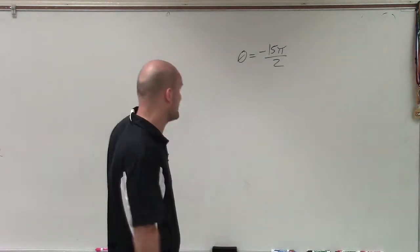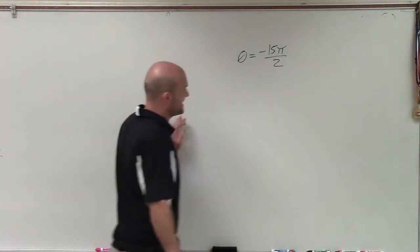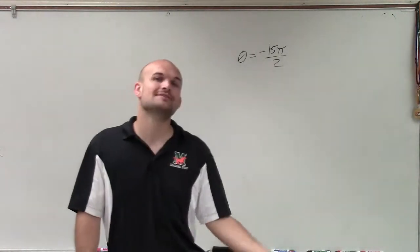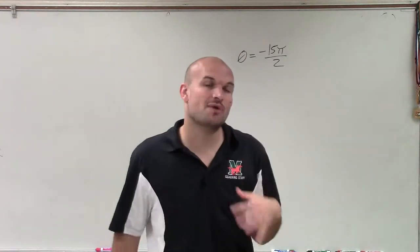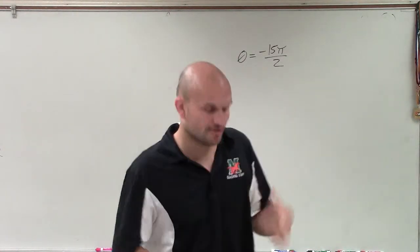Welcome. All right, so ladies and gentlemen, what we have here is theta equals negative 15 pi over 2. And what we want to do is determine the smallest and largest two coterminal angles.